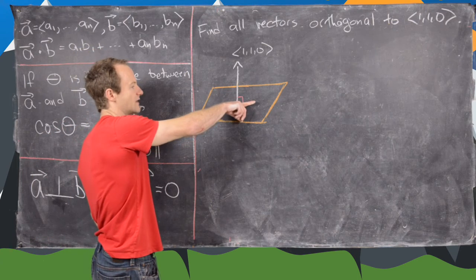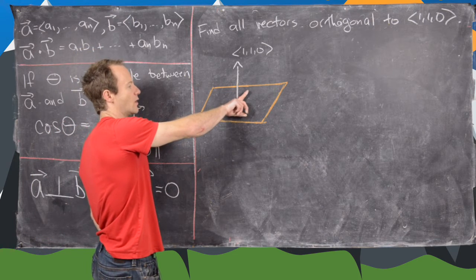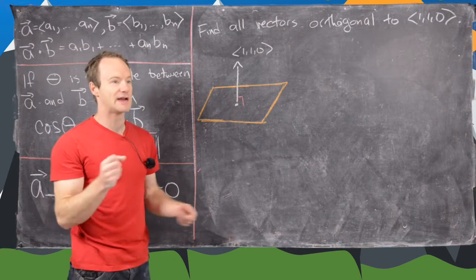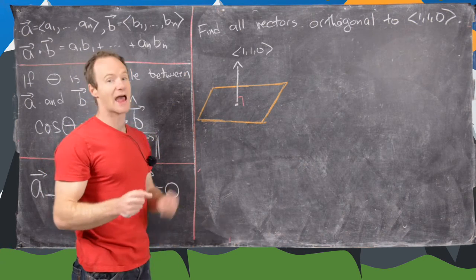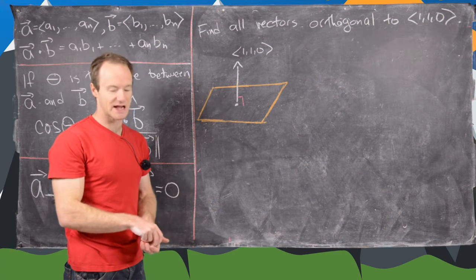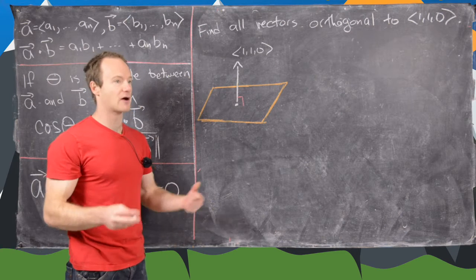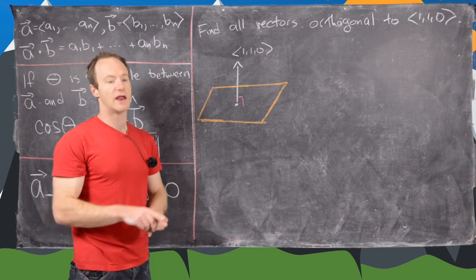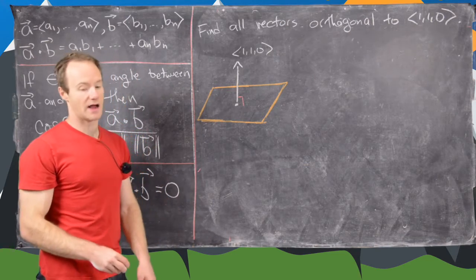So notice we could have one on this plane pointing that way. We could have one pointing that way. We could have one pointing back that way, and so on and so forth. And since a plane is two-dimensional, we should have two degrees of freedom in this case, in parallel to what we had last time, which was one degree of freedom when our orthogonal vectors made up a line.